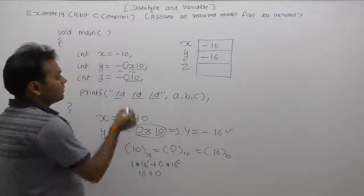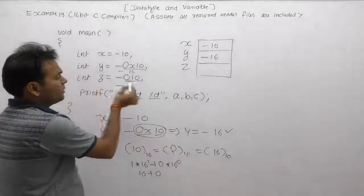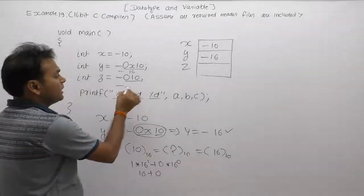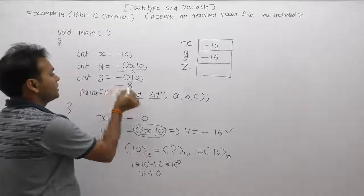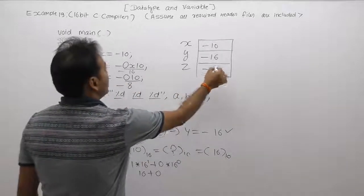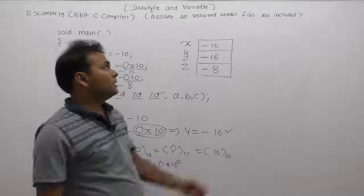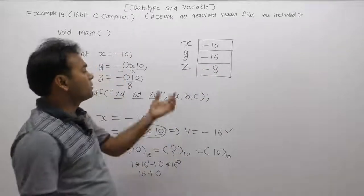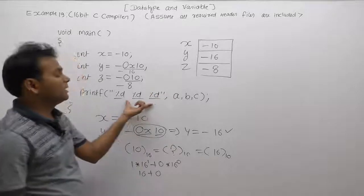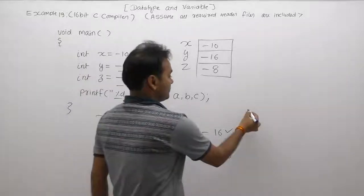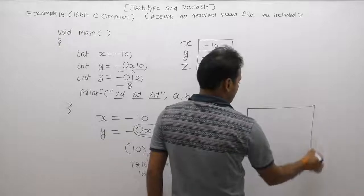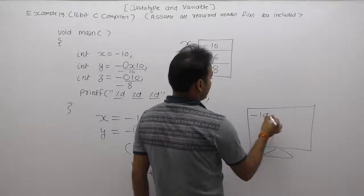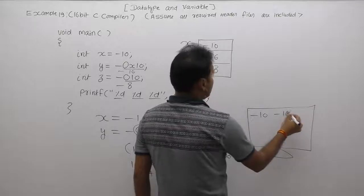Similarly, octal value 010 - the equivalent decimal value, what is base 8 converting to base 10? The value in base 10 is 8, so it is equivalent to minus 8. This is the value of x, y, z: x is minus 10, y is minus 16, and z is minus 8.